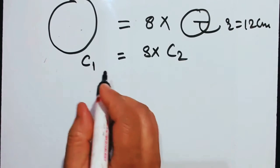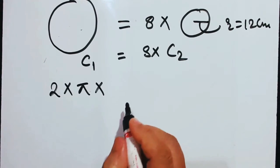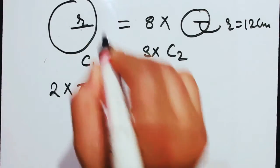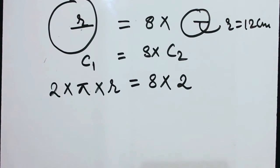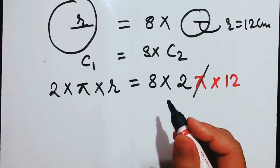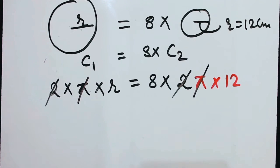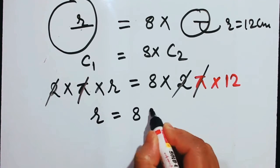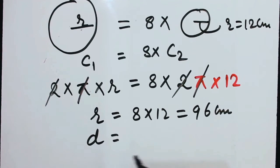So C1 equals 2πR, and this equals eight times C2, which is 2πr. Here r is already 12. The 2π on both sides cancels, so R equals 8 times 12, which equals 96 centimeters.